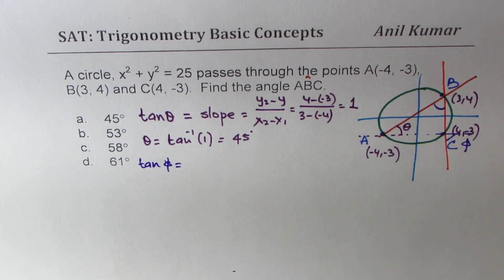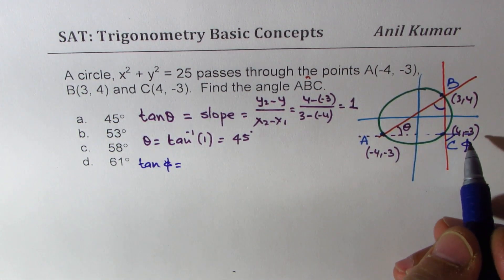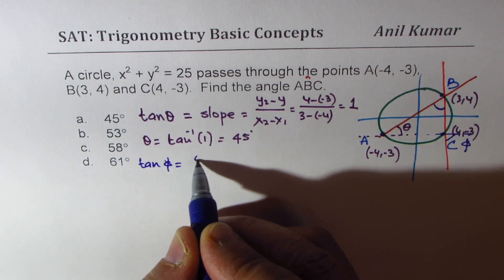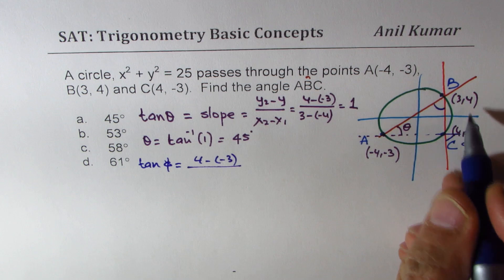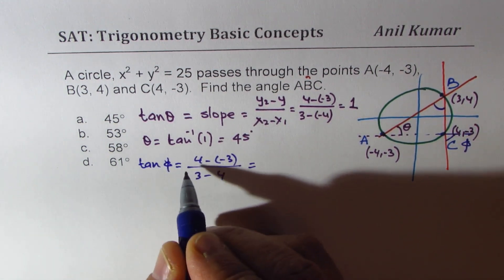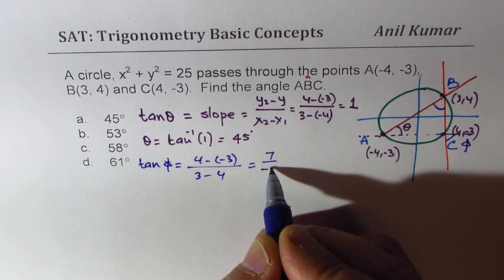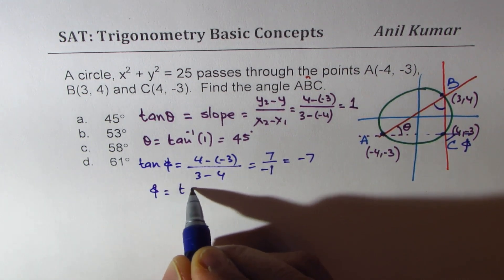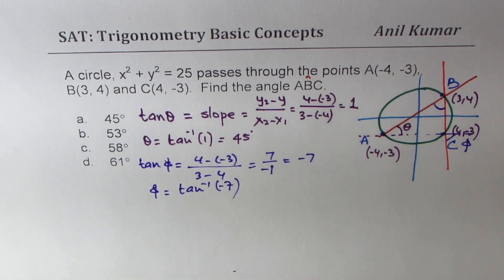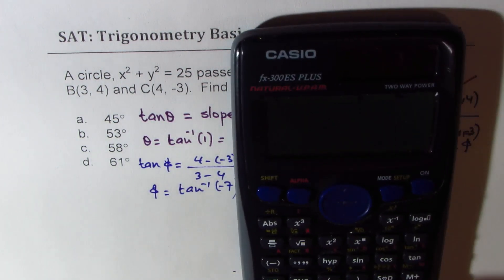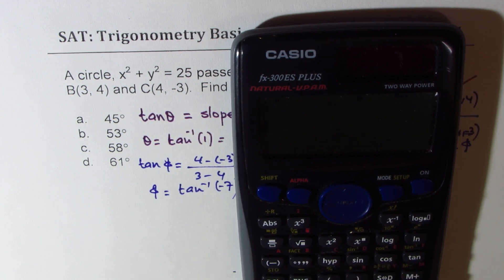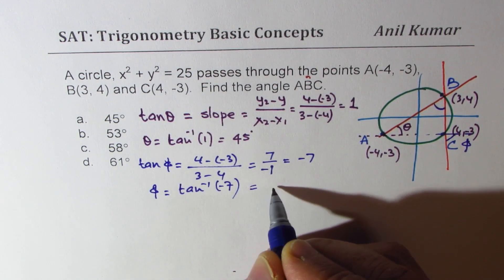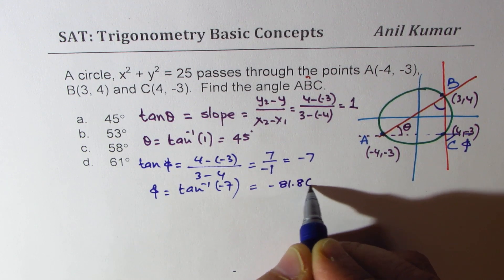So we say let this angle be φ, so we say tan φ is equal to again the slope, which is -3 minus 4 over... we can say 4 minus (-3) divided by 3 minus 4. That gives you 7 over -1, so -7. So what is φ equal to? So φ equals tan⁻¹(-7). Let's use the calculator, so we get shift, tan inverse of -7. It gives you -81.86.